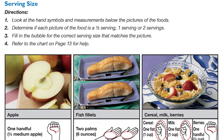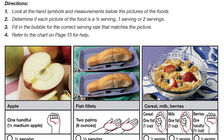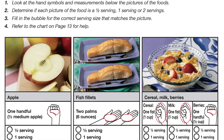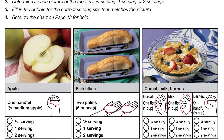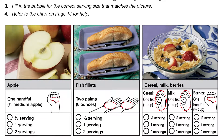We're going to look at the hand symbols and measurements below each picture of food. By looking at the pictures, we're going to select if the food is half a serving, one serving, or two servings. Fill in the bubble with an X for the correct serving size that matches the pictures.